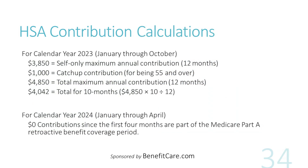Let's look at HSA contributions for self-only coverage for calendar years 2023 and 2024, and what the correct HSA contribution for this Medicare beneficiary is. For calendar year 2023, it is 10 months — January through October — of the annual maximum self-only amount, plus a catch-up contribution for being 55 and over. The numbers: $3,850 self-only maximum plus a $1,000 catch-up contribution equals a total maximum annual contribution of $4,850. To get the 10-month amount, multiply by 10 then divide by 12, giving a maximum self-only HSA contribution limit for calendar year 2023 of $4,042. For calendar year 2024, there are no contributions, since the first four months are part of the Part A retroactive benefit coverage period.